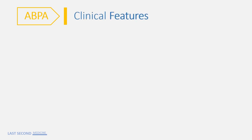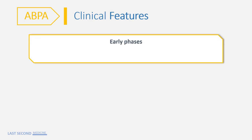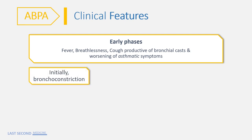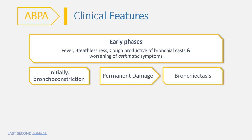Clinical features depend on the stage of the disease. Common manifestations in the early phase include fever, breathlessness, cough productive of bronchial casts, and worsening of asthmatic symptoms. There is initially symptoms of bronchoconstriction, but then permanent damage occurs causing bronchiectasis.